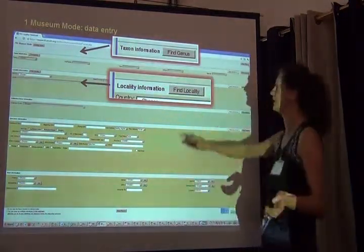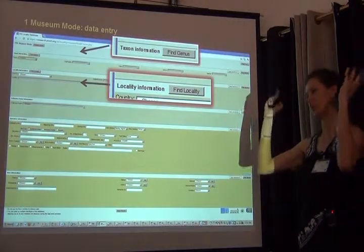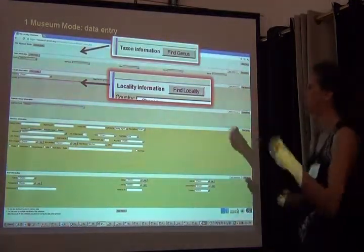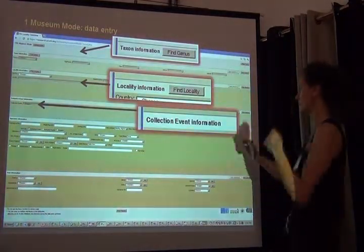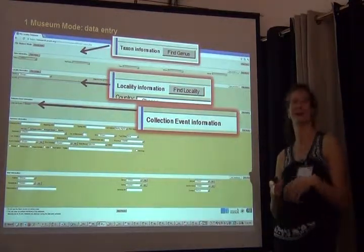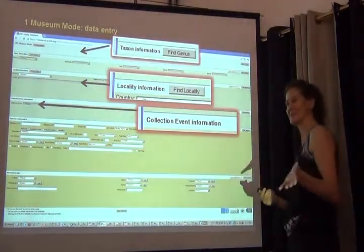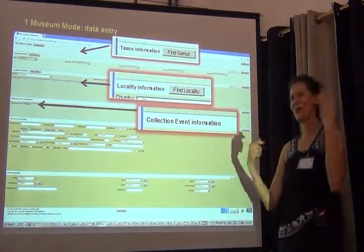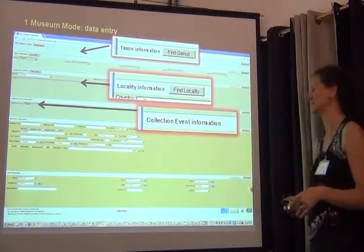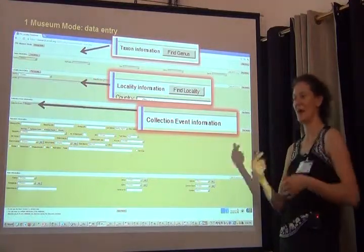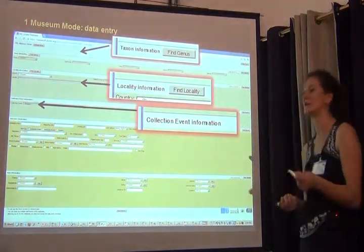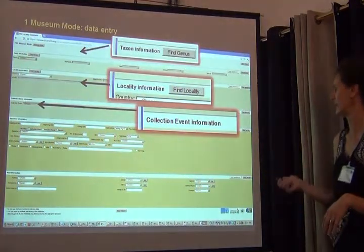For locality information, 'Find Locality' gives you a page showing all localities already entered, narrowed down by country, then primary and secondary subdivisions. For collection event information — unfortunately in the insect world we don't have a good collector database the way botanists do. This is one of the messiest fields, driven by whoever started entering data. Different collectors appear in different iterations — sometimes with their middle name, sometimes not — so this was a very messy thing in our case.